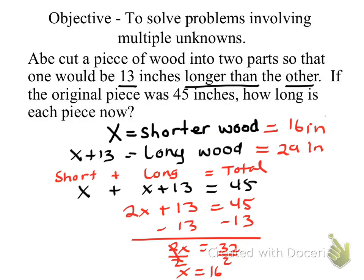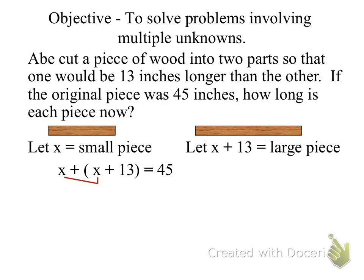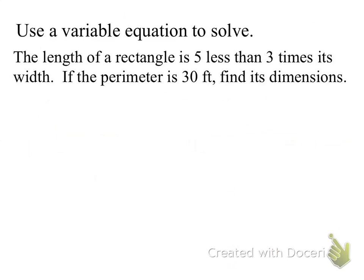All right. Moving on. The length of a rectangle is 5 less than 3 times its width. If the perimeter is 30 feet, find its dimensions.